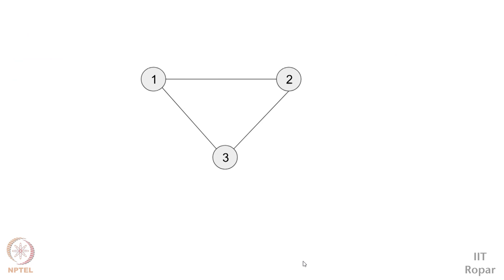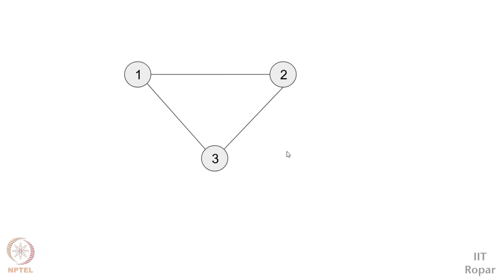Let me show you a graph. You can see on my screen there is a graph of 3 nodes. These circles are known as nodes, and these lines are the edges between them, or you can say interactions between them. If you see these nodes as people and edges as friendships among them, then you can see it is a social network. For example, person 1 is friends with person 2, person 2 with person 3, and person 3 with person 1 — this is a social interaction graph where people are nodes and interactions are edges.